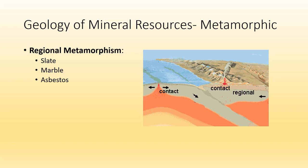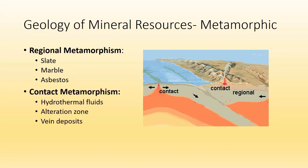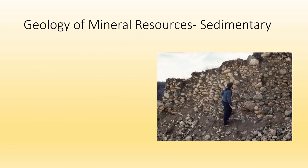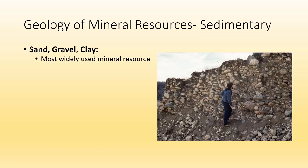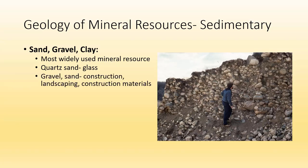For metamorphic resources, from regional metamorphism we get slate, marble, and asbestos. From contact metamorphism we get materials related to hydrothermal fluids and alteration zones around magma bodies, plus hydrothermal vein deposits. From sedimentary rocks we derive quite a few resources as well. Sand, gravel, and clay is the number one most widely used mineral resource in the world — used for paving, road base, building, and construction. Quartz sand is readily made into glass; clays are used for pottery and bricks.